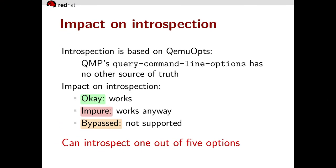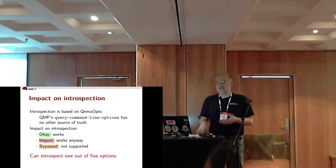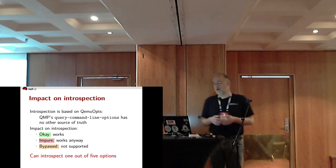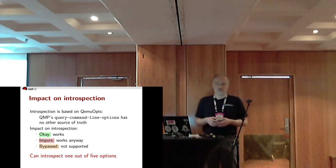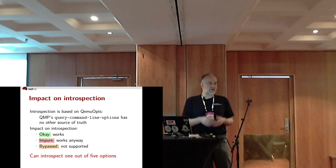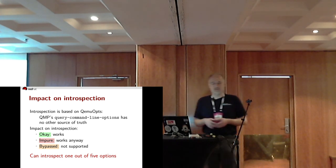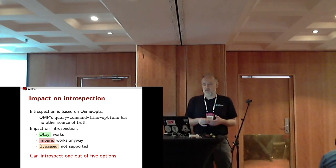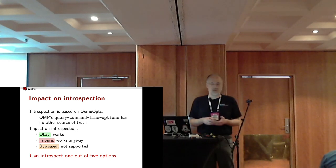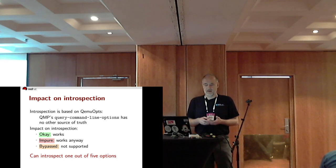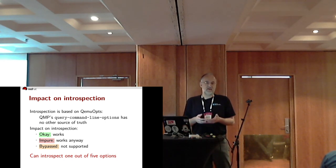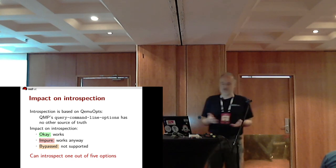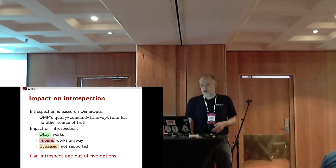Introspection is similarly effective, because it's also based on QEMUopts. QMP's query-command-line-options has no other source of truth. The green options work just fine; the purple options work fine here too because query-command-line-options isn't bothered by the extra actions. The orange options are simply not covered by introspection. So introspection again covers roughly one out of five options — this is kind of sad.